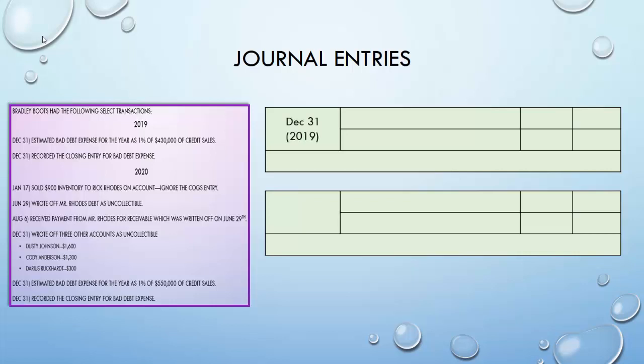The first entry on December 31st: they estimate bad debt expense for the year as 1% of their $430,000 of credit sales. Using the percent of sales method, you add a set percentage of your year's sales to your bad debt expense, assuming that 1% will never be collected. Because of the matching principle, we have to record expenses in the same period as revenues, so this allowance method puts bad debt expense in the same year as the credit sales and recorded sales revenue.